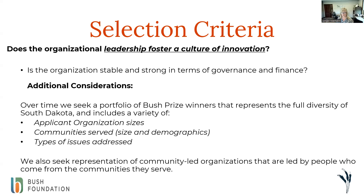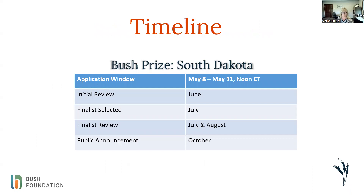Moving to the timeline: the Bush Prize application window opened on May 8th and will close on May 31st at noon central time. For those in mountain time, please note it is noon central time on May 31st. This is an online grant application, and once that noon deadline arrives, you will not be able to submit — the system automatically cuts you off. Make sure you get your application in before noon.